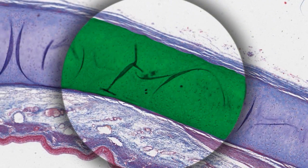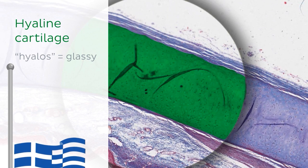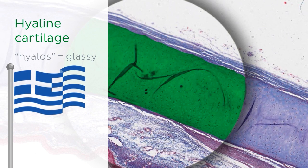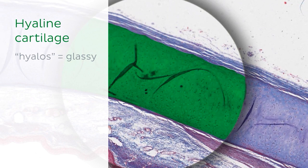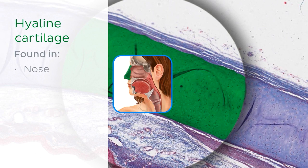So let's begin. Hyaline cartilage gets its name from the Greek word hyalos, which loosely translated means glassy. In a way that is because this type of cartilage has a smooth, translucent, or glassy appearance.